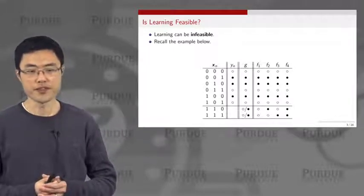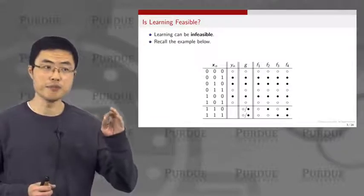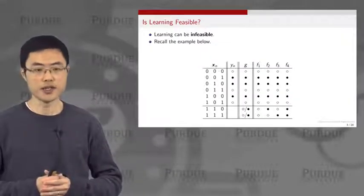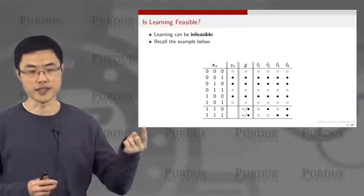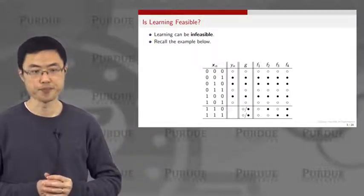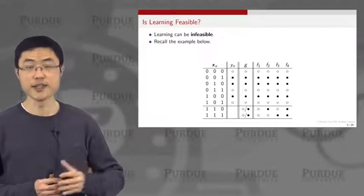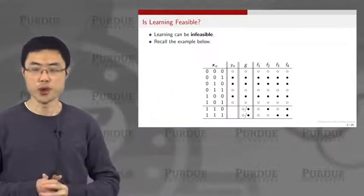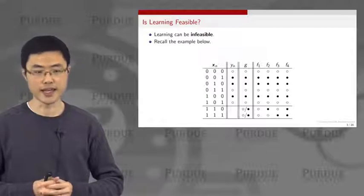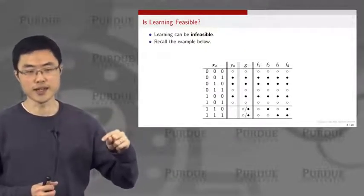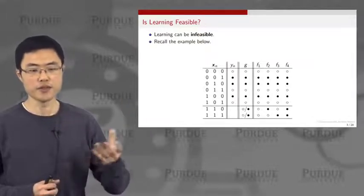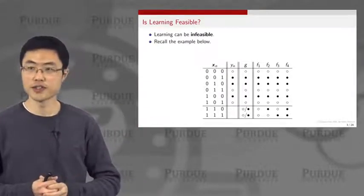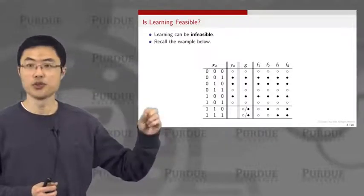In this example, we have a set of data points, and each data point is represented by a three-bit number: 000, 001, and so on. For every string, we have a label of either 0 or 1, given by the y values. We are given the set of data points and ask whether we can generalize from these training data points to the bottom two rows, which are the two testing cases.